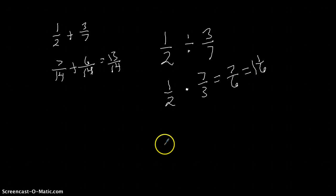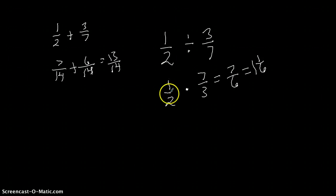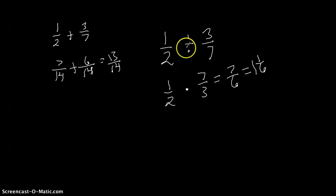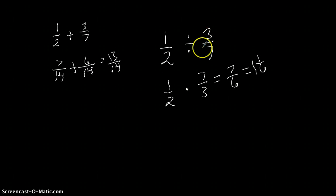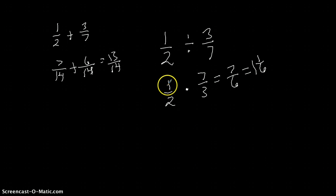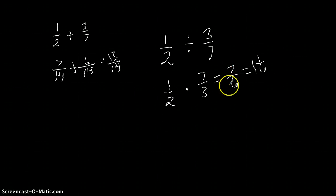Let's look at this problem again step by step. The first fraction stays the same — no changes. I have one-half, so I just write one-half. We change the division sign; no longer are we dividing, we are multiplying. My second fraction I have to do the inverse of: instead of three-sevenths I have seven-thirds. Then I multiply straight across: one times seven gave me seven, two times three gave me six, so I had seven-sixths, which simplifies to one and one-sixth.